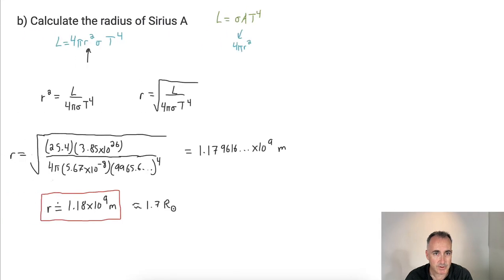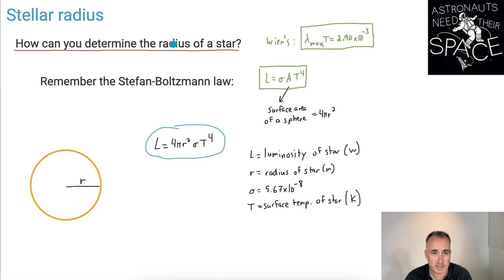So there we go. We've seen an example of how to calculate this radius of a star. And we've also seen how to use Wien's displacement law in order to use the peak wavelength to get the surface temperature of the star.